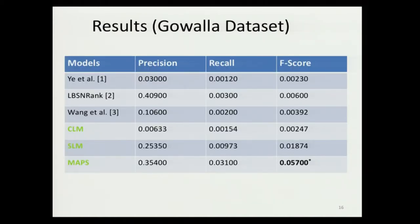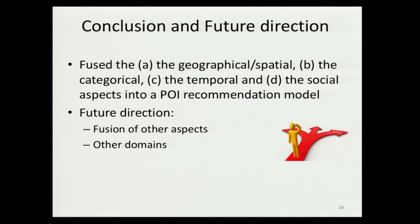The results show that MAPS performs well in terms of F-score in comparison to other relevant models. CLM (categorical link model) uses only the categorical aspect, SLM (spatial link model) uses only the spatial aspect, and when these two models are combined we get MAPS. This demonstrates how MAPS performs well in comparison to individual component models and other baselines.